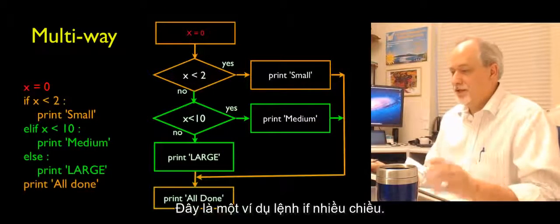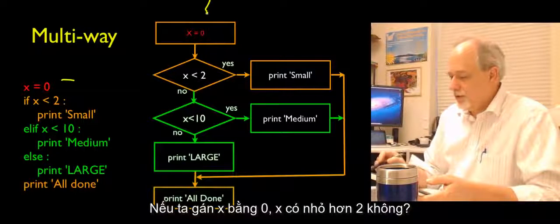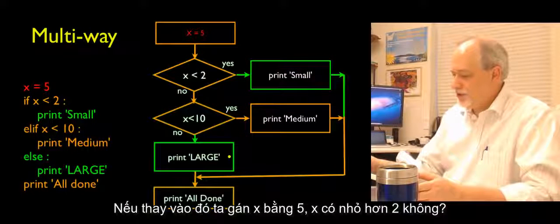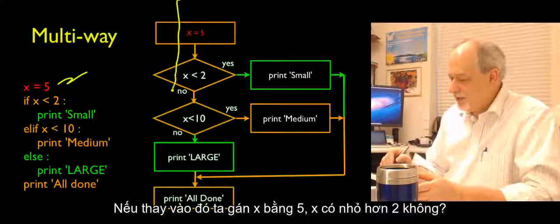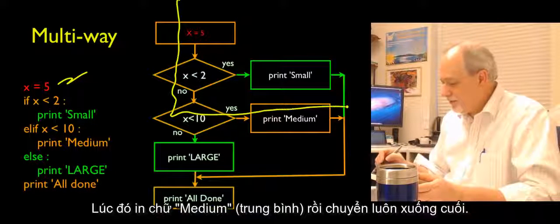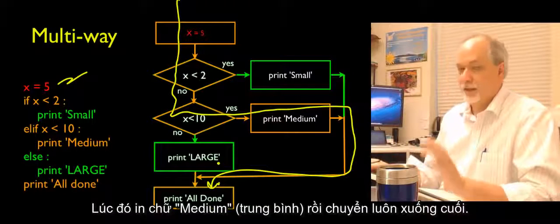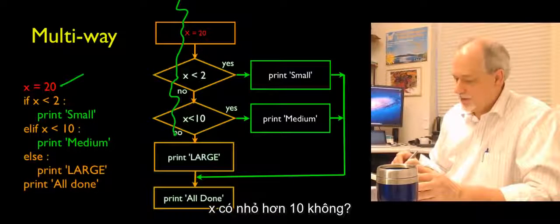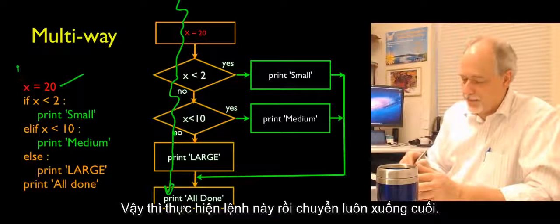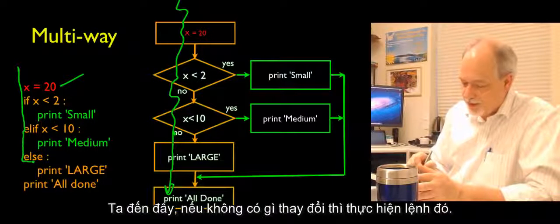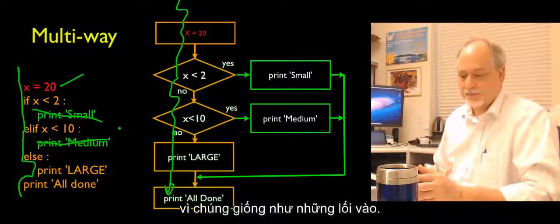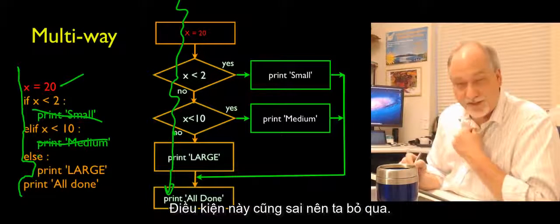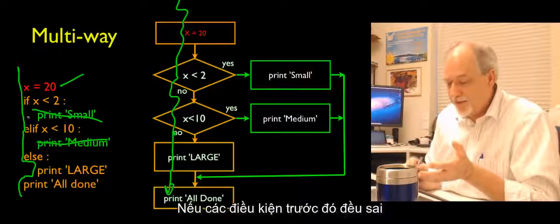Here's an example: if x equals 0, then 'is it less than 2?' — yes — print 'small'. If x equals 5, 'less than 2?' — no; 'less than 10?' — yes — print 'medium'. If x equals 20, both conditions are false, so we hit the else and print 'large'. One and only one block executes. The else acts as a catch-all — if none of the previous conditions were true, the else runs.